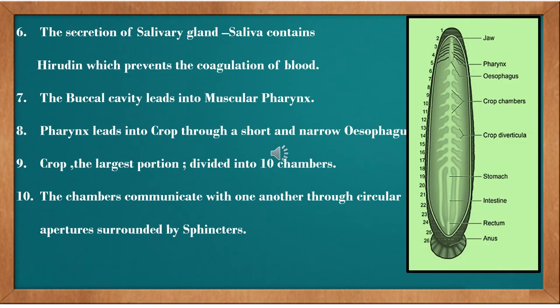The salivary glands secrete saliva, and the saliva contains hirudine. Hirudine prevents the coagulation of blood.